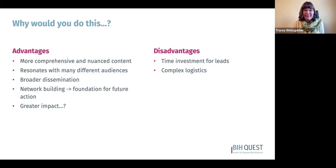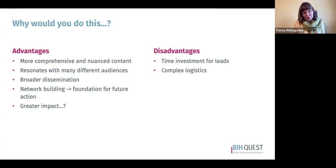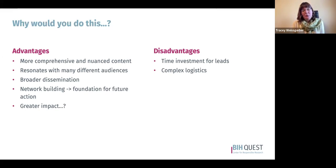Instead of just you and your research group disseminating your paper, you have all of these different author coalitions, as well as the networks each of your authors bring, so the paper is being shared much more broadly, which can lead to much broader impact. It's also a good opportunity for network building — we've seen people developing relationships and collaborations beyond simply the paper we complete as a group. Still to be determined is whether all of these things, while leading to better papers, translate into greater impact.